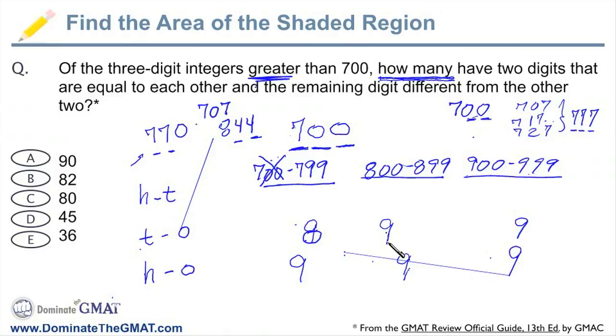But we would have 9 here, because 800 counts—that's greater than 700. 811, 822, 833, 844, and so forth, except 888. That doesn't count. So there are going to be 9 of those. There are going to be 9 of these.